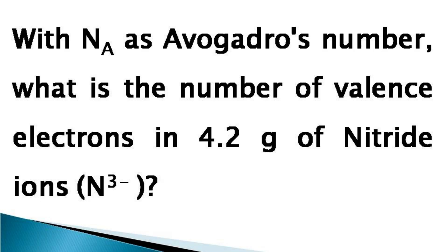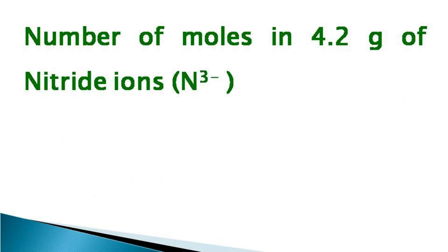So to solve this problem, first we evaluate the number of moles in 4.2 grams of nitride ions. This can be evaluated by dividing the mass of the nitride ions by the atomic mass of nitrogen, as nitride ions and nitrogen both have the same atomic mass, that is 14. So the number of moles becomes equal to 4.2 divided by 14, which equals 0.3 mole.